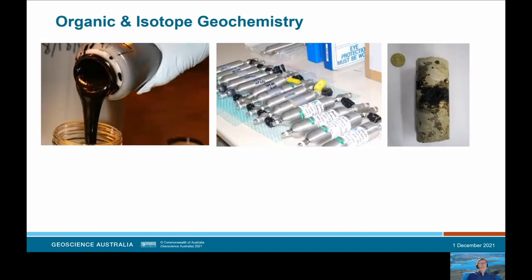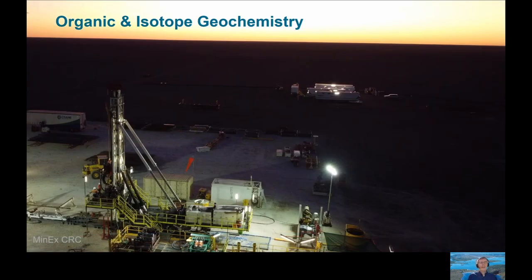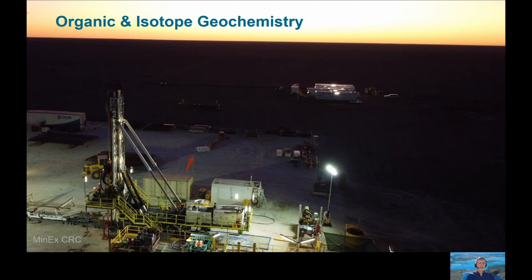While grain size analysis provides an important insight into modern marine ecology, life on earth has left organic traces in the rock record for over a billion years. The organic and isotope geochemistry team analyses oil, gas and rock samples to understand that fascinating geological history. A recent example is from the Karara 1 stratigraphic drill hole in the Northern Territory — a deep well drilled into the newly discovered Karara subbasin, concealed by younger sediments. Stratigraphic drill holes are exciting because they let us peek into rocks we cannot otherwise see, analyse them, and find out what their history is.